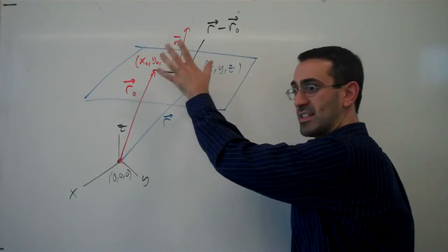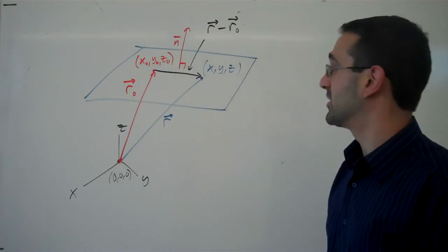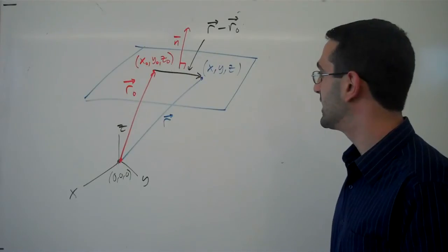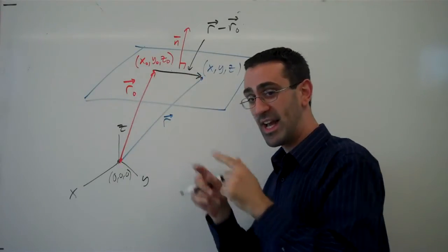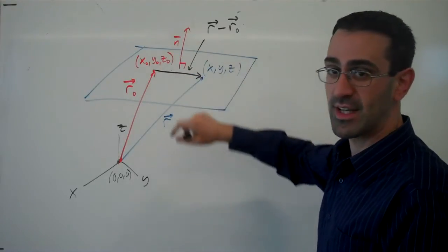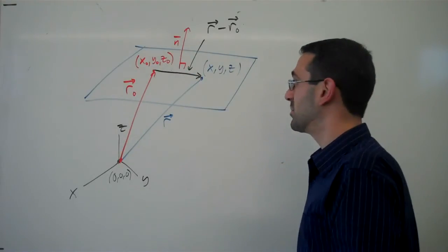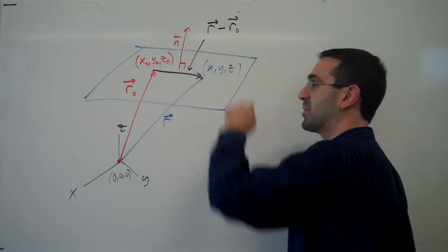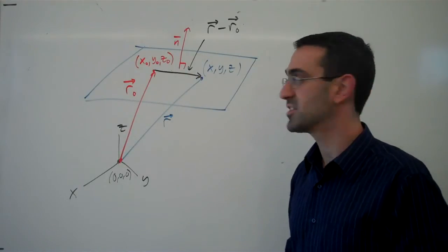This vector lies in the plane, or at least parallel to the plane, because it connects two points in the plane. Now, because the normal vector is orthogonal to the plane, it is also going to be perpendicular to this vector r minus r_not.